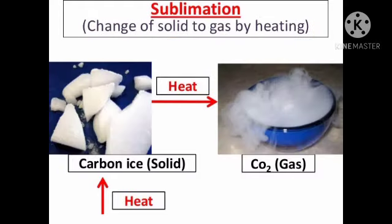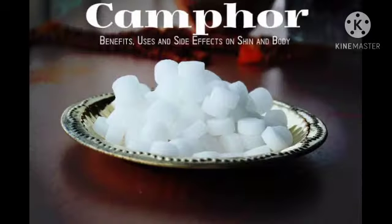What is meant by sublimation? It is the change of solid directly to gas on heating. For example, dry ice (solid CO₂) when heated gives carbon dioxide gas directly. So, the change of state from solid to gas directly is called sublimation. An example is camphor.